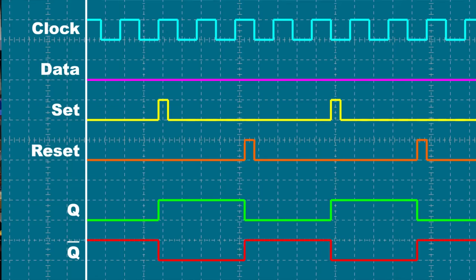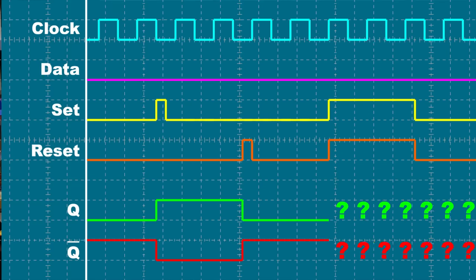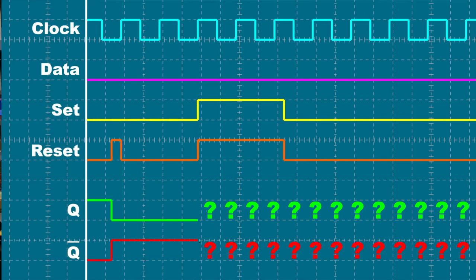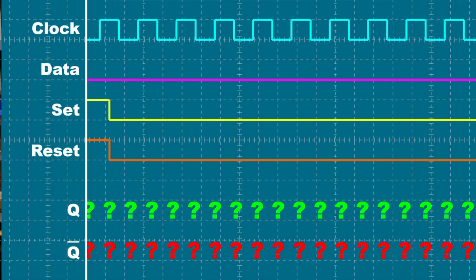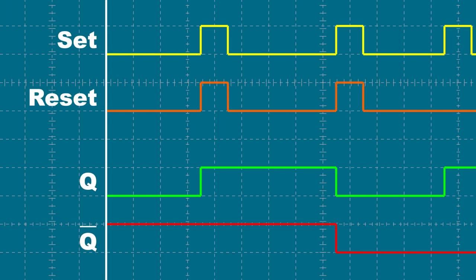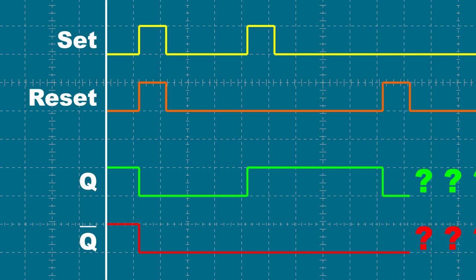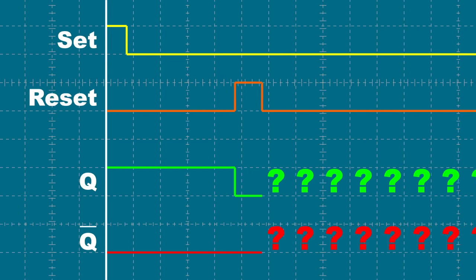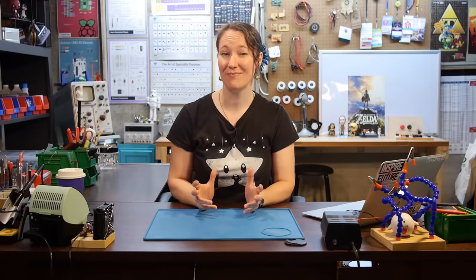With D-type flip-flops that have set and reset, there's a potential problem that can occur. We know that set latches output Q high, and reset resets it back to low. But if both set and reset go active at the same time, the flip-flop enters an invalid state. Inputs Q and not Q, which should ideally be inverse, can become both high or both low. This causes the flip-flop to lose control of the outputs, and their future states become unpredictable. Long story short, it's bad.